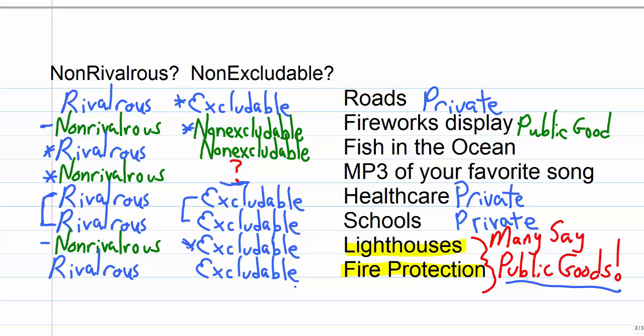Fire protection is both rivalrous and excludable because you need more firemen and more fire trucks to service a larger population and fire protection is also actually excludable. You could have a business where you don't put out a fire if people don't pay and many insurance companies in history have done it exactly this way. They have firemen that only respond if you've paid for your fire insurance.